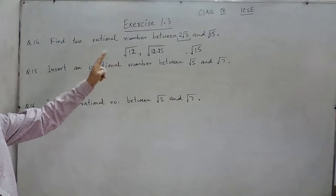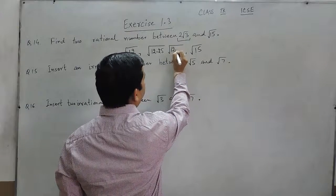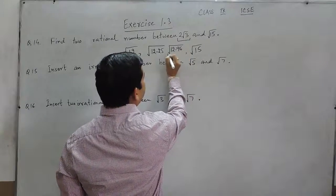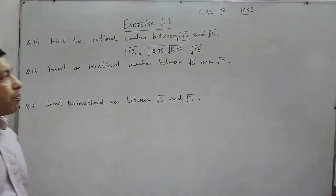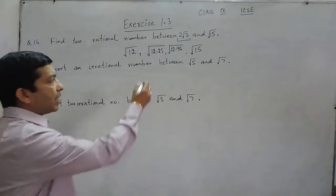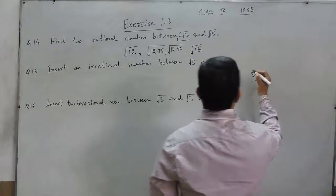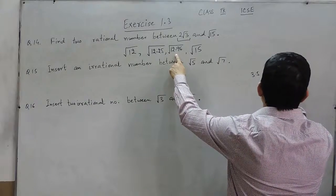So 12.25 is the first rational number which is possible. Under root of 12.96, this can be another number which is a perfect square. So we have to understand that this is the square of 3.5, and this is the square of 3.6.